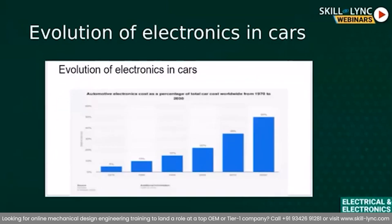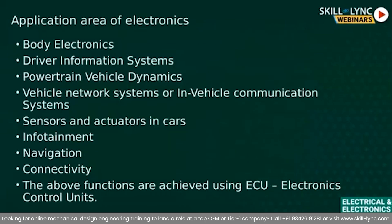Let's move on to this graph. On the x-axis you have the years starting from 1976 till 2020, and it is also projected till 2030. On the y-axis you can see the cost of electronics in terms of percentage of total cost of the car. As you can see in this slide, the cost of electronics as a percentage of total cost of car worldwide from 1970 to 2030 is gradually but steadily increasing. By 2030, it is predicted that 50 percent of the total cost of an automobile will be due to electronics.